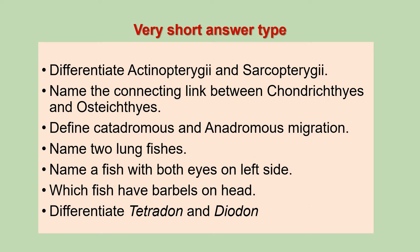The first question of this category is: differentiate Actinopterygii and Sarcopterygii. Next, name the connecting link between Condrichthyes and Osteichthyes. Next, define Catadromous and Anadromous migration. Next, name two lobe fishes.